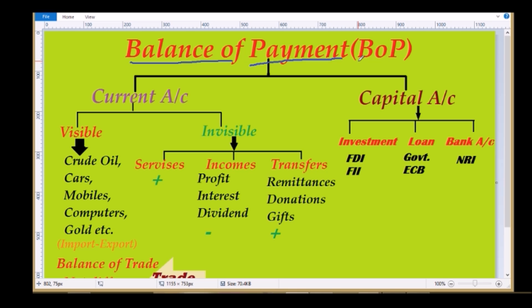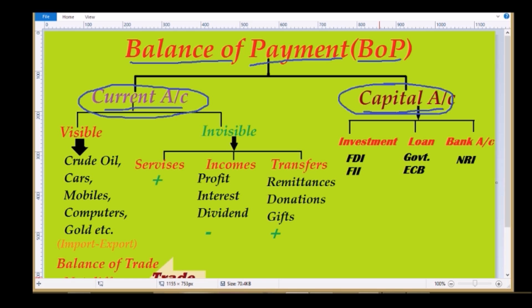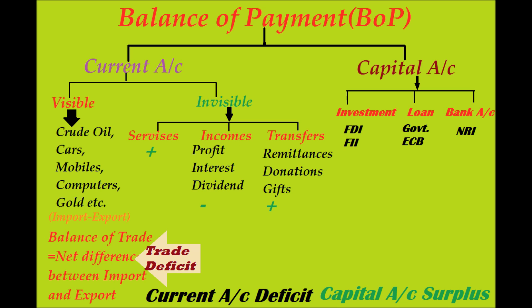Both the Current Account and Capital Account have their own sub-parts. In the case of India, there is a deficiency in the Current Account and a surplus in the Capital Account — we will see why in the next video. Here you can see how these components are classified and what their contents are. The two main components are the Current Account and the Capital Account.